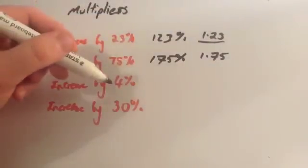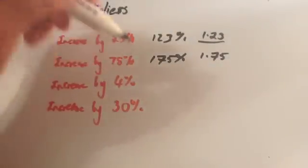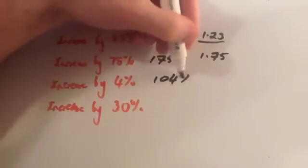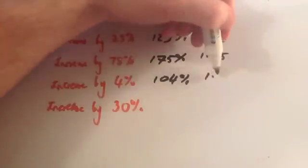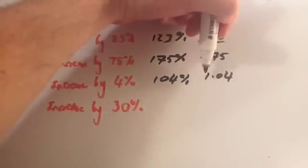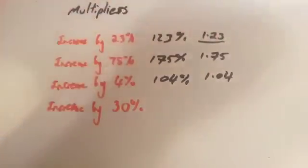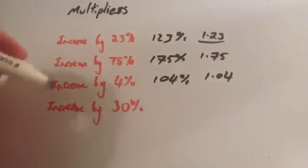If you wanted to increase by 4%, you start off with 100, add on 4%, is 104%. As a multiplier, that would be 1.04. So if you multiply a number by 1.04, you increase it by 4%.